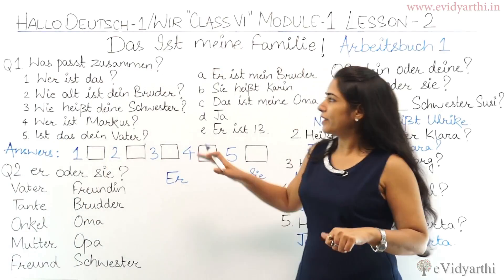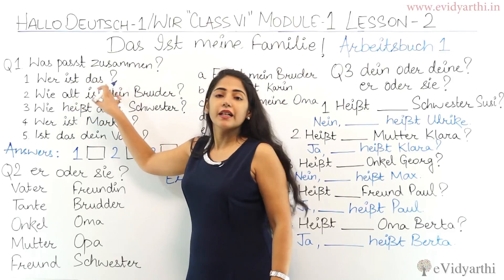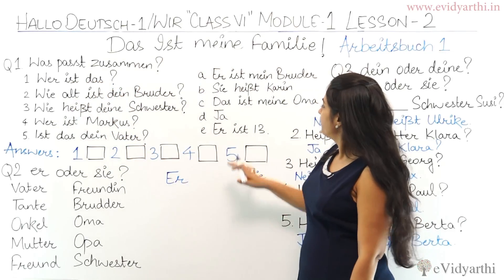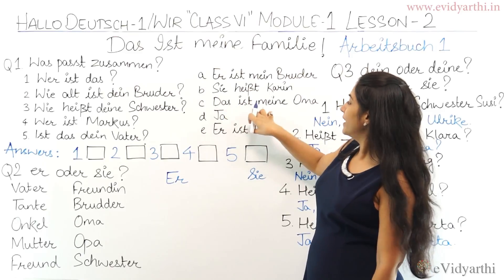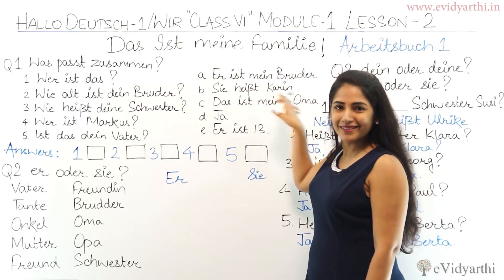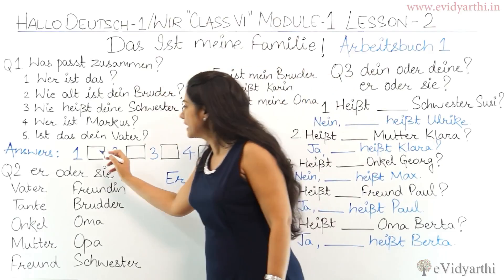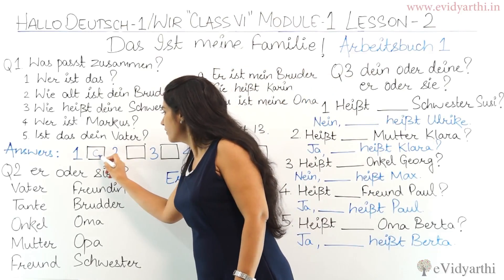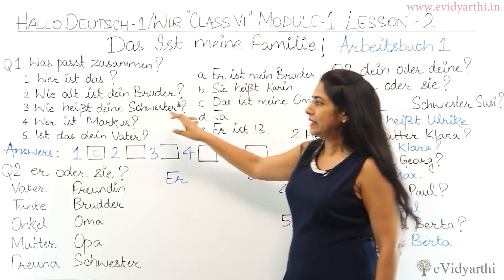Let's match. 'Wer ist das?' means 'Who is this?' So from the options, 'Das ist meine Oma' — 'This is my grandmother' — is the answer. So the first answer is C, which is already given in your book.